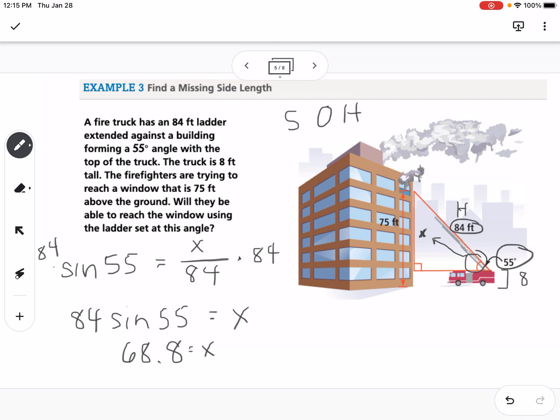Then we have to say 68.8 plus the 8 feet, which is the height of the truck, gives us 76.8 feet. So to answer the question, will they be able to reach the window using the ladder? The answer would be yes.